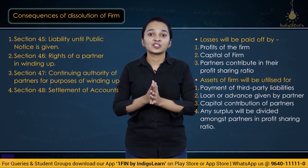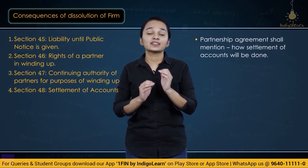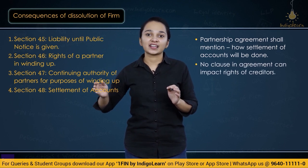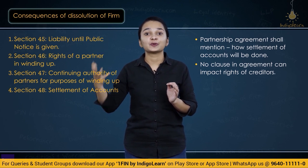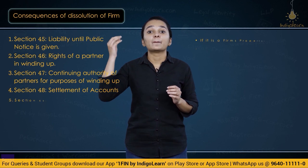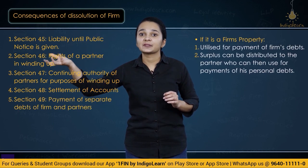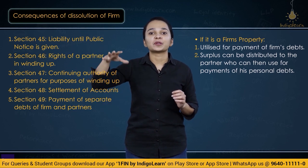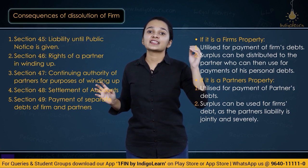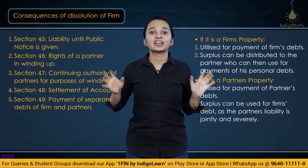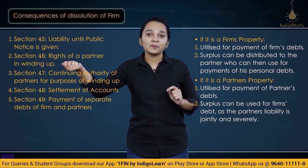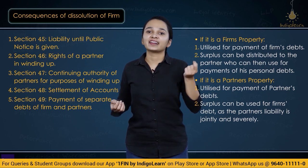Section 49 — partners can expressly mention in their agreement how settlement of accounts will happen, but nothing in the agreement can deprive creditors of their right to receive payment before partners. Partnership property shall first be utilized for payment of firm's debts, and any surplus for partners' personal debts. Partners' property shall first be utilized for their own separate debts, and any surplus for the firm's debts. So: if it is firm's property — first firm, then partner; if it is a partner's property — first partner, then firm. This concludes Unit 3 and the Indian Partnership Act 1932.